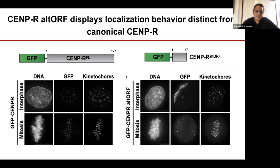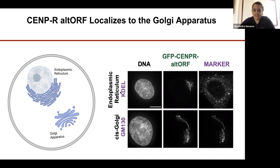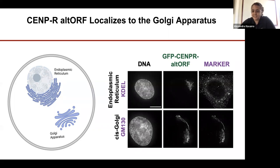We wanted to get a better sense of where exactly in the cell this was localizing, so we compared the localization of this small peptide to markers within the cell. Given that localization was peripheral to the nucleus, we looked at the endoplasmic reticulum and the Golgi. The comparison showed that the alt-ORF clearly localizes to a very different structure from the ER, but when compared to a reference protein for the Golgi, the localization was pretty identical.